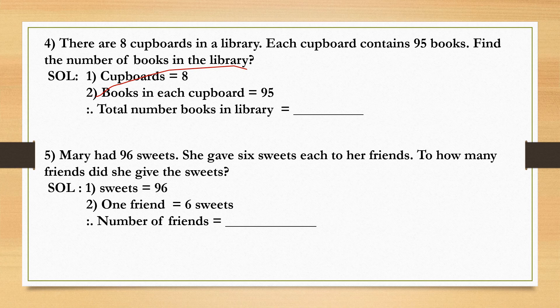Cupboards equal to eight. Books in each cupboard equals to 95.